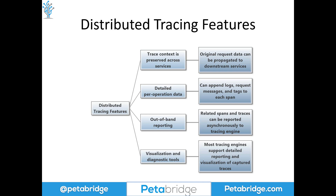These distributed tracing engines feature rich visualization and diagnostic tools to let you see the entire chain of events that occurred inside your distributed system, helping restore coherence. Many engines also support the ability to drill down into individual operations and search for specific requests — by status codes, session ID, or other metadata — making it much easier to understand what's happening inside a microservice network or any other type of distributed architecture.